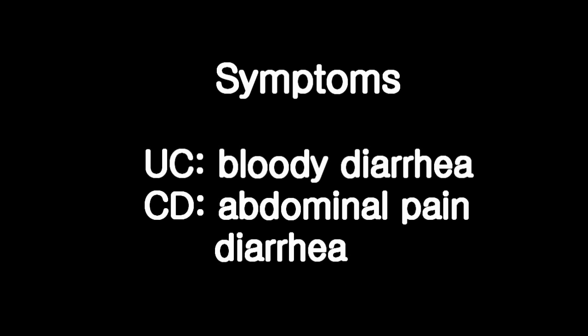In ulcerative colitis, bleeding, usually in the form of bloody diarrhea, is the most common initial presentation. On the other hand, in Crohn's disease, crampy abdominal pain and non-bloody diarrhea are more commonly seen.